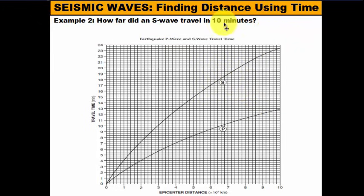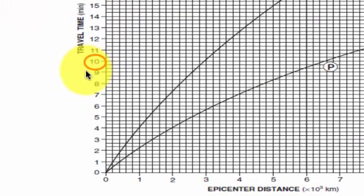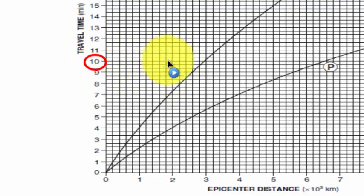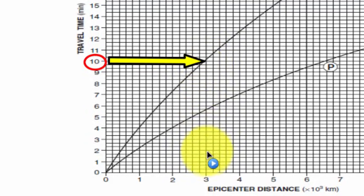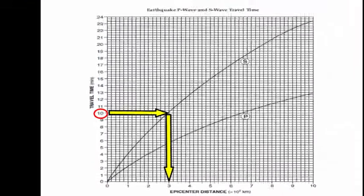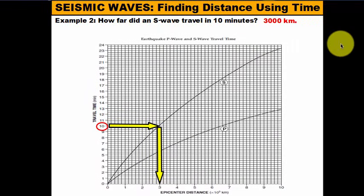I've got to find distance using time. Since they give me 10 minutes, I'm going to start off at 10 minutes and mark that so I know exactly where I'm starting from. You're going to do the same thing as in the previous example, just in the opposite order. At 10 minutes, I move across until I intersect with the S-wave curve. Then once I hit the S-wave curve, I drop down to see what my distance was — and as you can see, the distance was 3,000 kilometers.